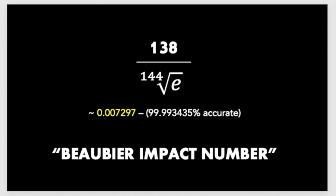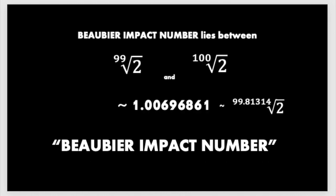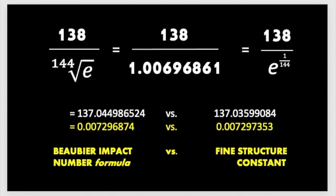There are a lot of different ways to calculate the fine structure constant, and depending on the energy input, the number can be slightly different. So, this is pretty close, and I'm pretty stoked on this. The Beaubier impact number lies between the 99th root of 2 or the 100th root of 2, and it exactly equals the 99.81314th root of 2.